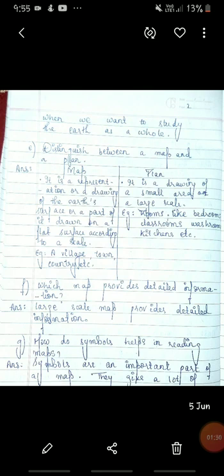Next question. Distinguish between a map and a plan. Answer. Map. It is a representation or a drawing of the earth's surface or a part of it drawn on a flat surface according to a scale. Example, a village, town, country, etc.